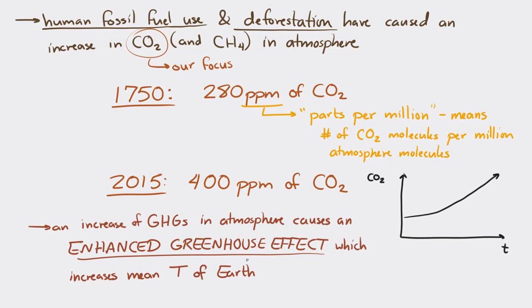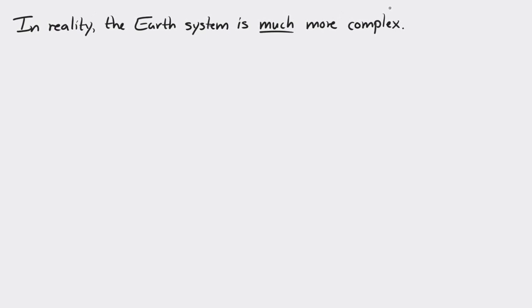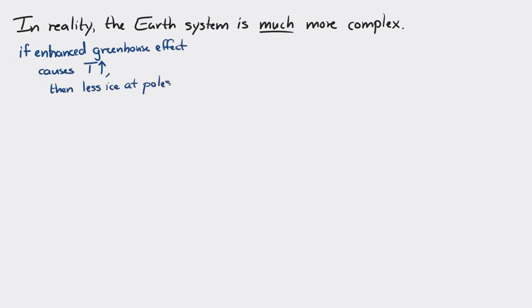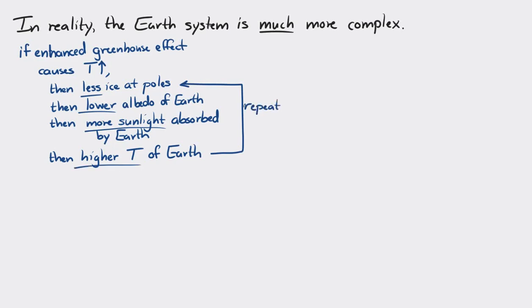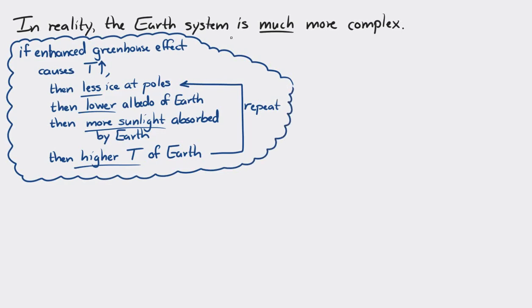That is a simplified view — in reality, many complicated systems interact in the Earth's climate. For example, if the enhanced greenhouse effect causes an increase in average temperature, we'd expect less ice at the poles. Less ice means a lower albedo for the Earth, so more sunlight is absorbed, causing higher temperatures, which means even less ice, lower albedo, more absorption, and even higher temperatures. This feedback loop is called the ice-albedo feedback.